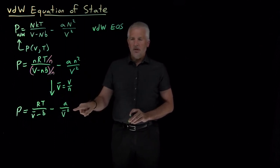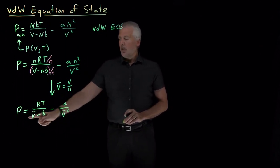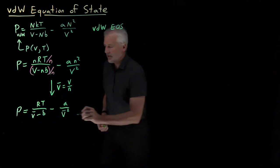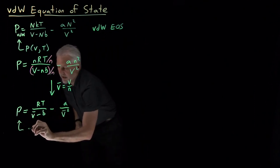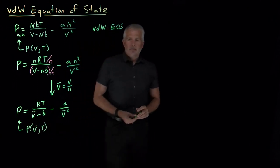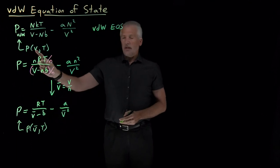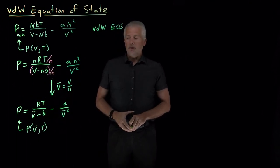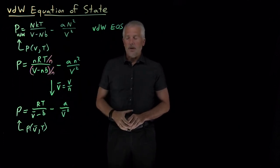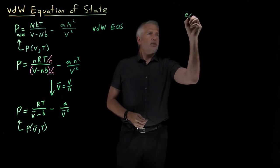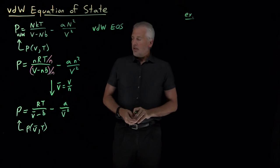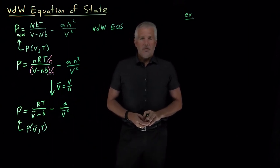Not only did the equation get a little simpler, it's also more convenient because now all the properties — the temperature, the molar volume, and the pressure — are all intensive properties. So this is still called the Van der Waals equation of state, but now I'm calculating the pressure as a function of the molar volume and the temperature. As a bonus, I no longer need to know how many molecules or moles of gas I'm talking about. Let's do an example and see what these expressions tell us about the pressure of a Van der Waals gas.